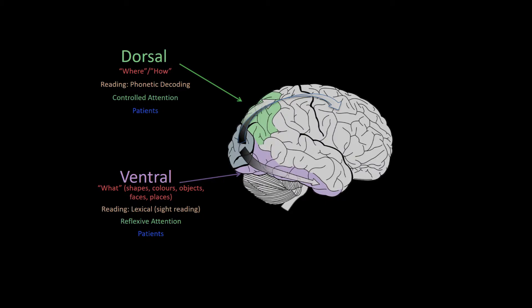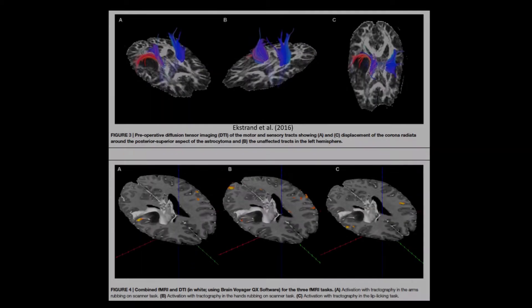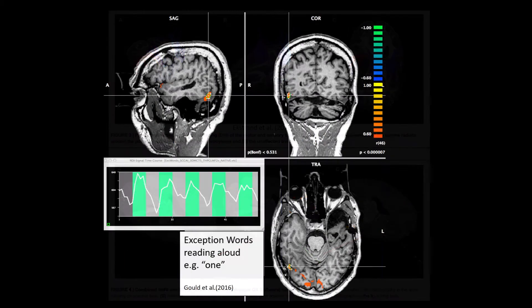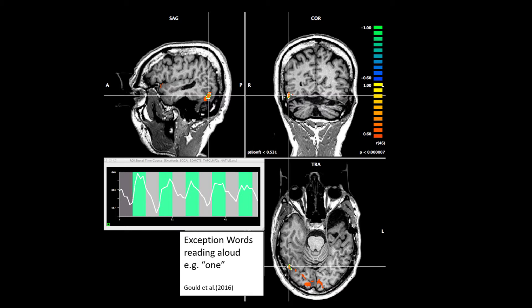Our lab also applies this basic research to help neurosurgeons localize function and structure in patients about to undergo surgery — for either dorsal stream impairments, in this case using diffusion tensor imaging and basic motor fMRI for a dorsal astrocytoma, or in this case ventral stream impairments in temporal lobe epilepsy using fMRI of lexical reading of exception words.